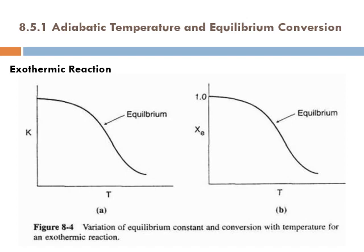Let's look at the K versus T profile for an exothermic reaction. As temperature increases, the value of K decreases. That is because for an exothermic reaction, if we increase the temperature we are simply shifting the equilibrium backward. K is the activities of the products over the activities of the reactants, each raised to their stoichiometric coefficient.